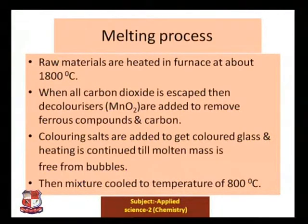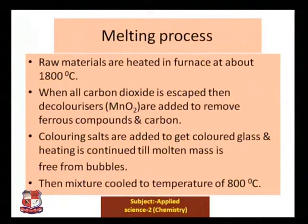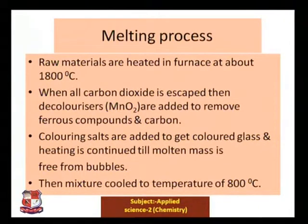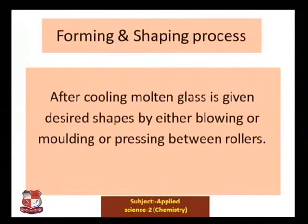If colored glass is desired, coloring salts are added to the mixture. Heating is continued until the molten glass is free from bubbles. Then the mixture is cooled to about 800 degrees Celsius — a significant temperature drop from the initial 1800 degrees Celsius.